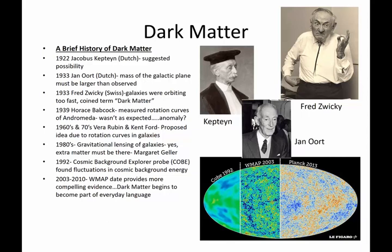So a couple more other pieces of this history. Jakob Kapteyn, the Dutch astronomer, proposed something like this way back in the 1920s. Jan Oort, the Dutch astronomer who discovered the Oort cloud, he proposed that most of the mass of galaxies must be larger than we currently observed.